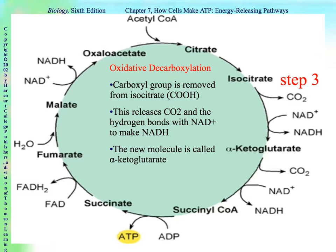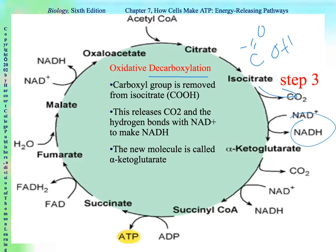Step three — we're going to do oxidative decarboxylation. Decarboxylation means we're going to remove carbon dioxide. We're removing the carboxyl group, so that gets subtracted. The carbon dioxide gets released, and that hydrogen adds to NAD+ to make NADH. The new molecule after that is called alpha-ketoglutarate. Instead of being a six-carbon molecule, because we removed carbon dioxide, it is a five-carbon molecule.